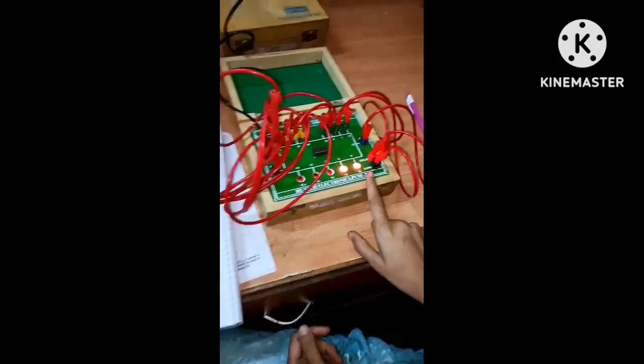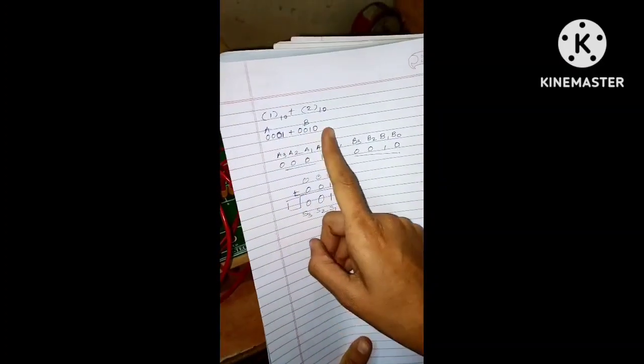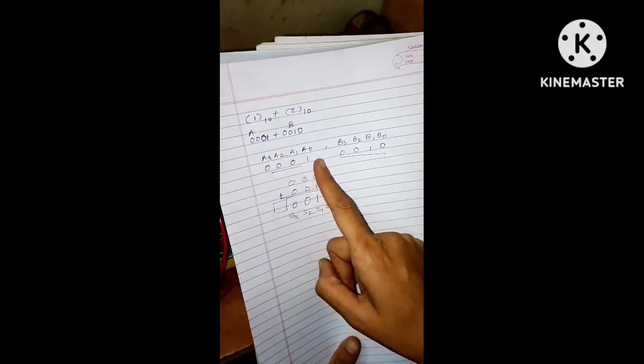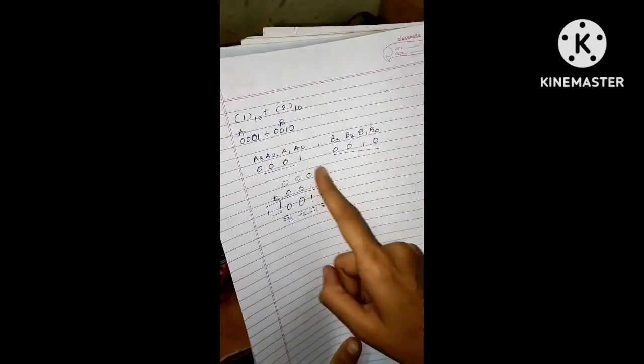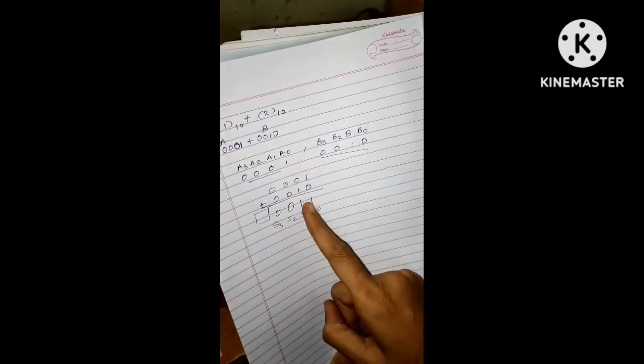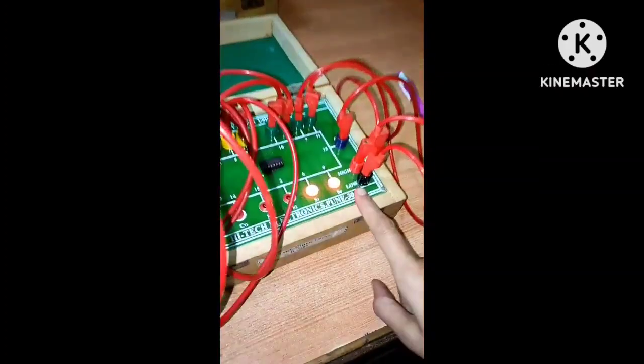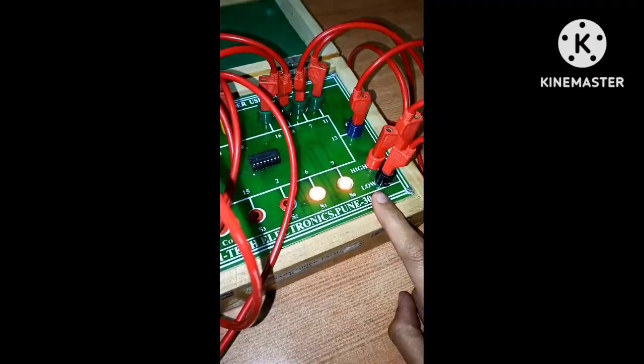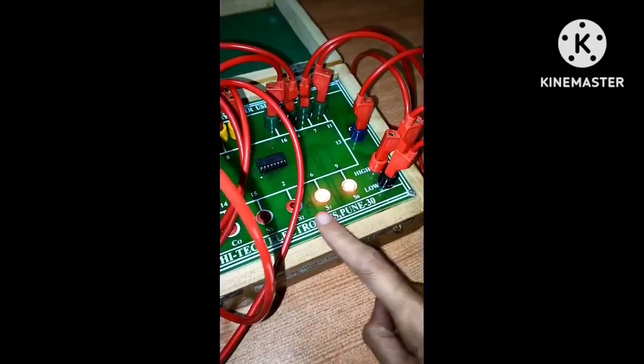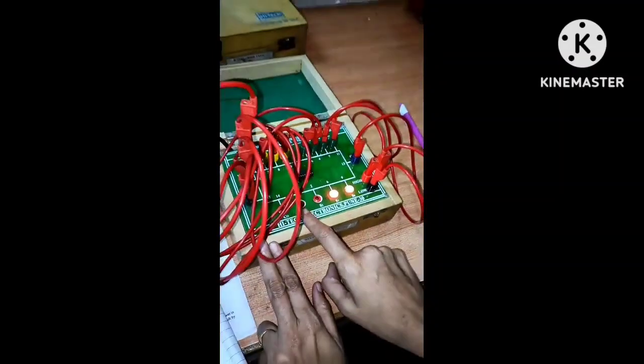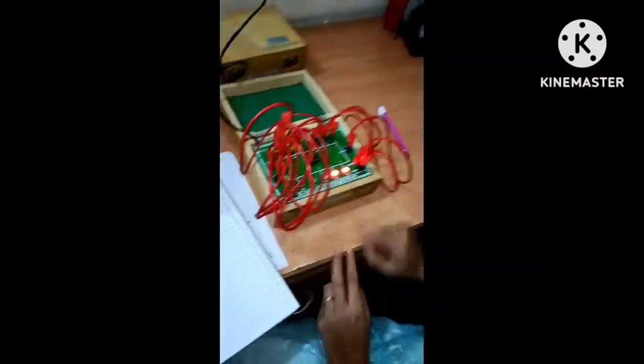And here you see the addition of A and B: 0001 plus 0010 equals 0011. And it is verified on this IC 7483 4-bit binary adder, showing the result 0011.